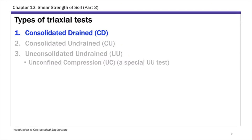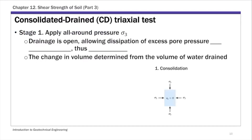For a consolidated drained triaxial test, there are two stages. The first stage is to apply the all-around pressure, sigma 3. You keep the drainage open, which allows the excess pore water pressure to dissipate — meaning the excess pore pressure is zero. As pore water pressure dissipates, the soil consolidates. That's what the first letter stands for: consolidated. You can also measure the change in volume from the volume of water drained.